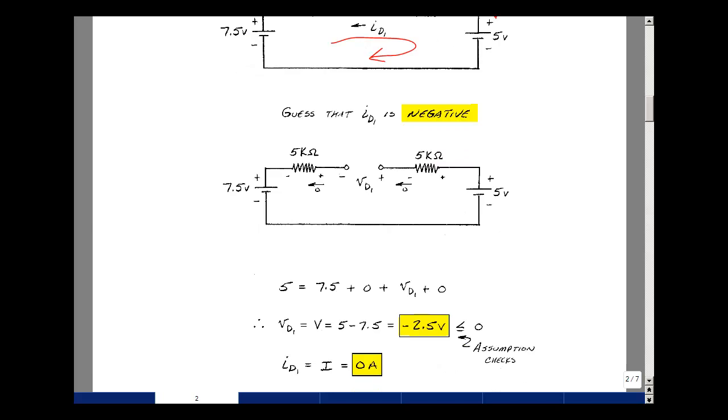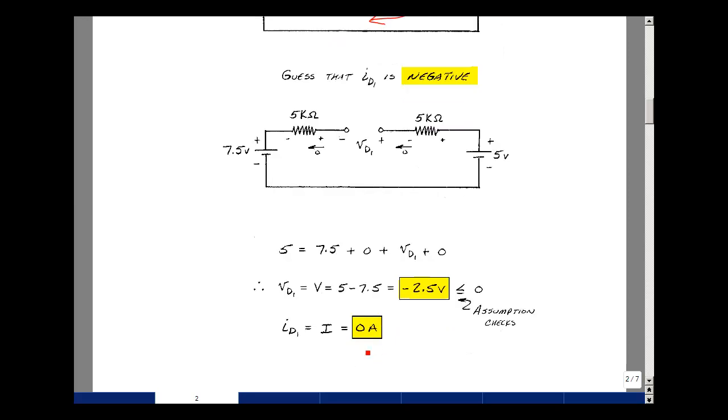Solve for V sub D1, and we have five minus 7.5, and that's a negative 2.5 volts, and that checks our assumption that it was an open circuit. It's also the value of voltage that we're going to be solving for. And then the current is equal to zero because it's an open circuit. And this is supplemental problem 9.2.